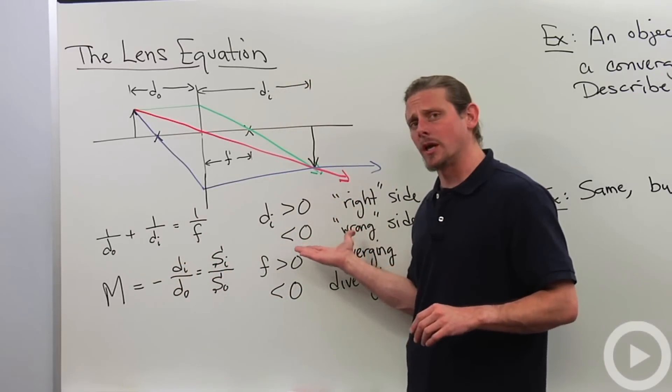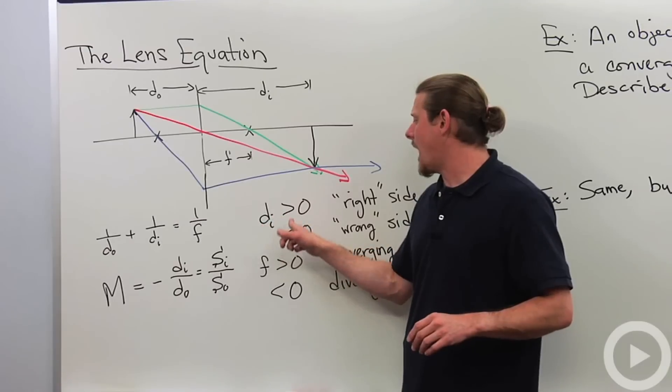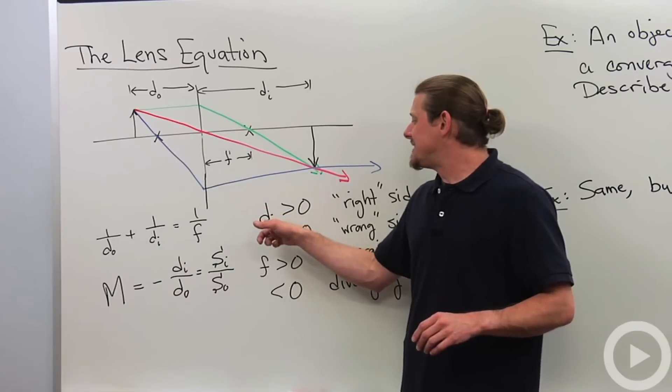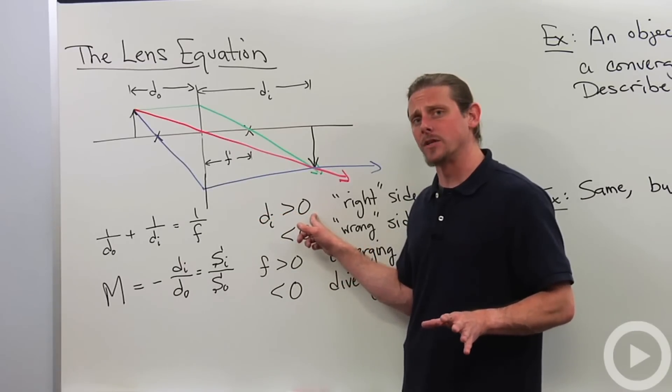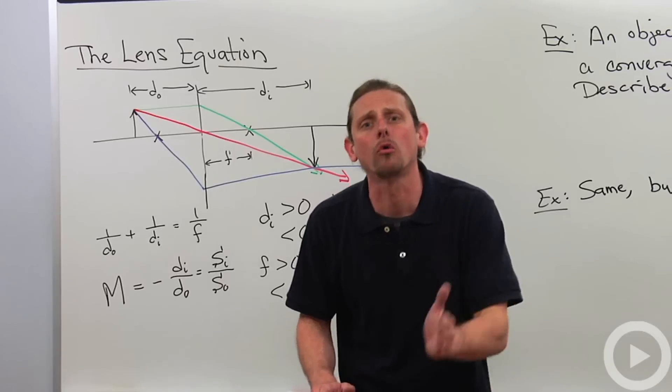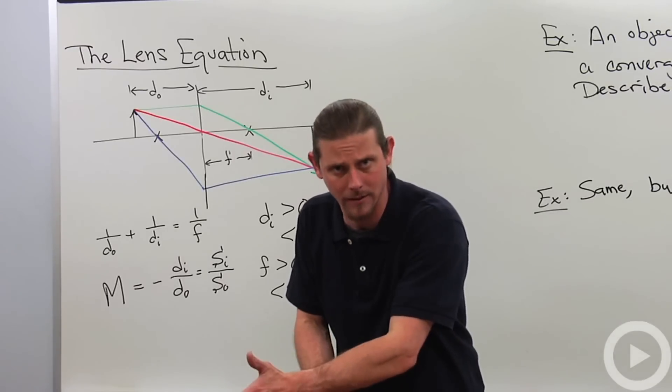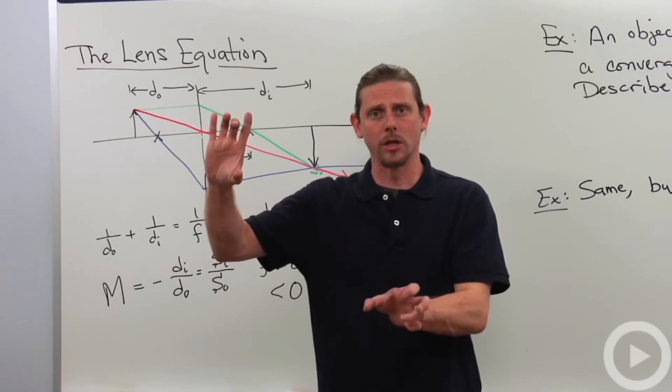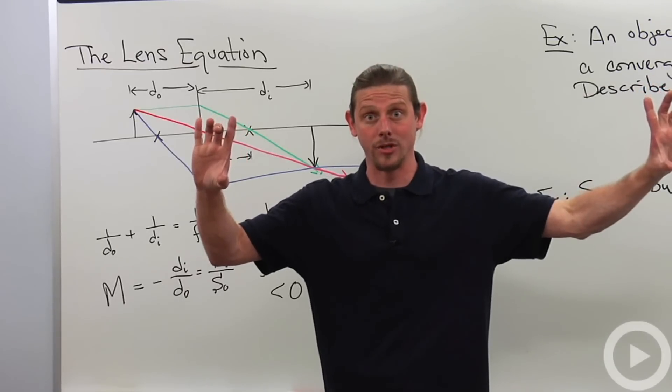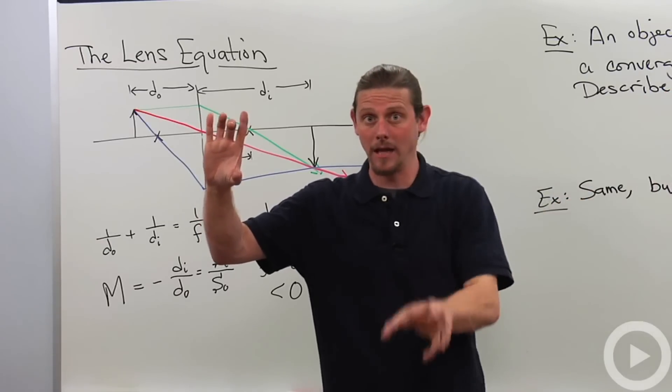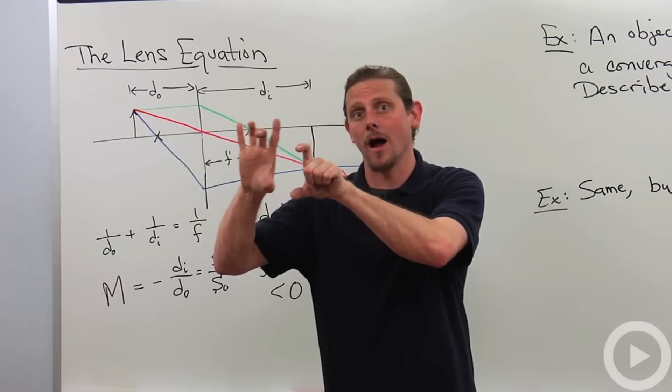The only kind of strange things are what does it mean when DI is positive versus DI is negative. If DI is positive out of this equation, then what it means is that the image appears on the correct side of the lens. So what that means is that the object is on one side, here's the lens, the image is on the other side. If I got DI was negative and it's a lens, then the image and object are on the same side.